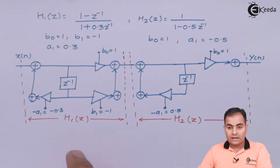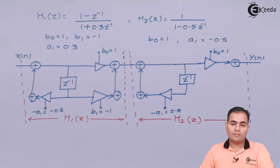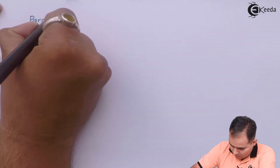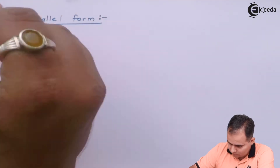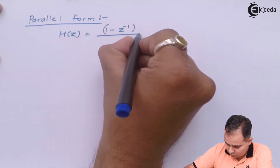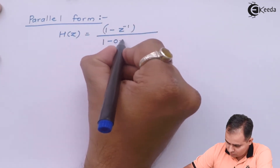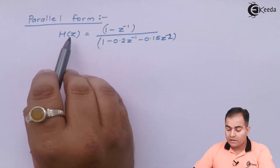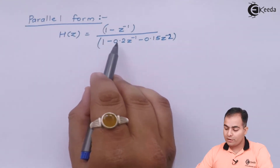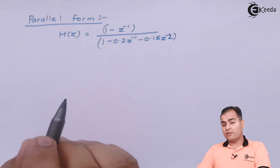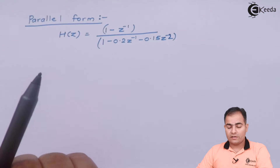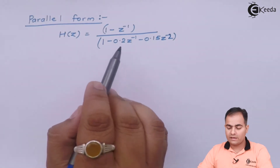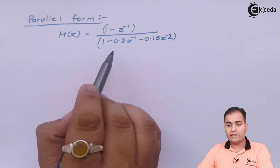In cascade form, all transfer functions are connected in series. In parallel form, all functions are placed in parallel. To achieve the parallel form, we perform partial fractions. H(z) = (1 - z⁻¹) / (1 - 0.2z⁻¹ - 0.15z⁻²). We factorize the denominator — the factors are already known from the cascade form: (1 + 0.3z⁻¹) and (1 - 0.5z⁻¹).